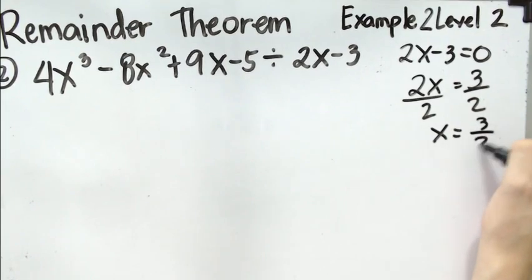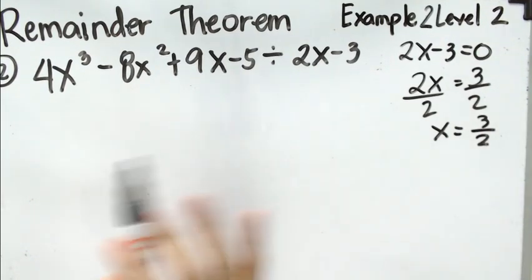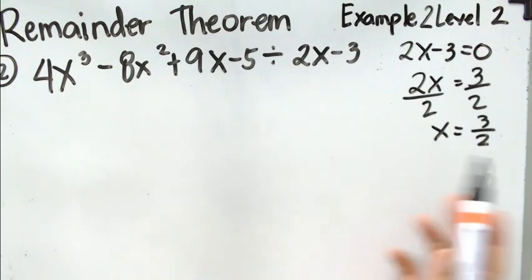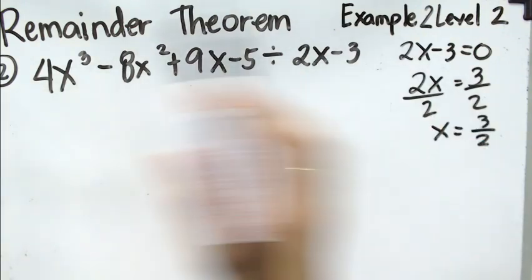So, we have here x as 3 over 2. When we say evaluating, it's simply substituting the value of x to the given value, or from the given polynomial, we substitute that.